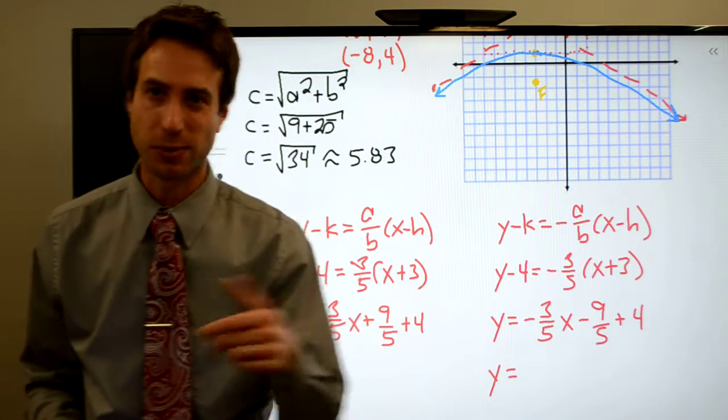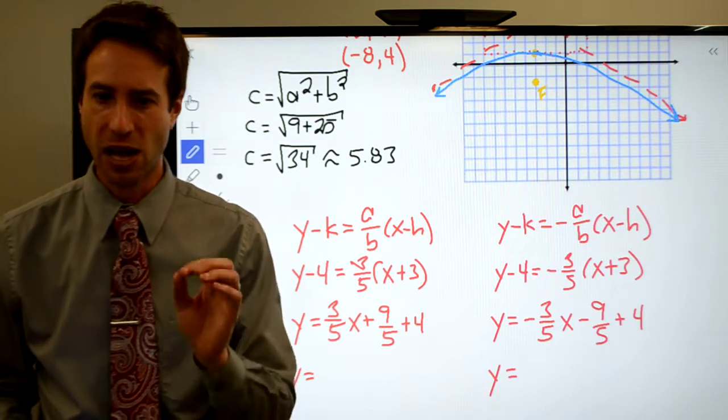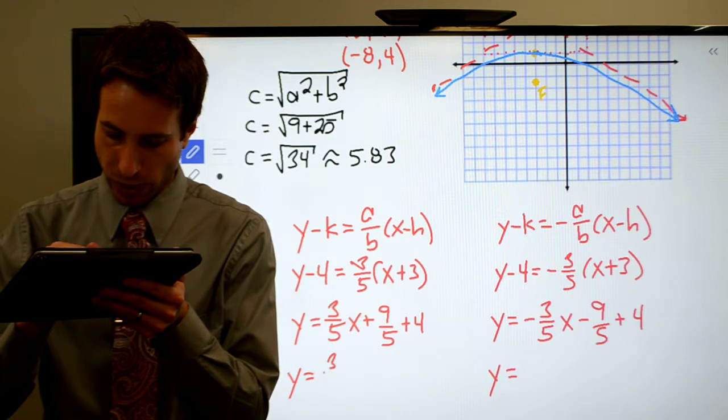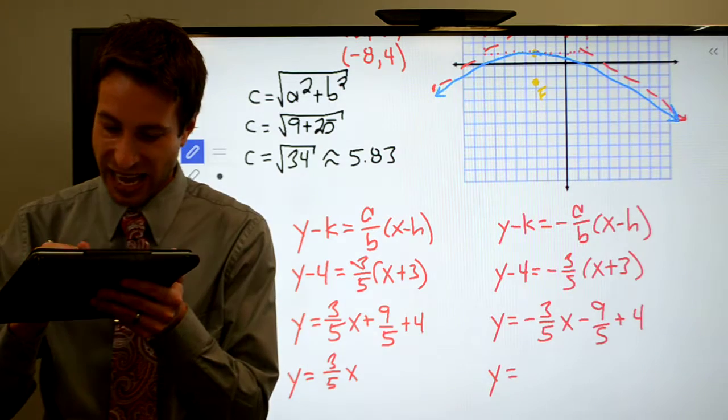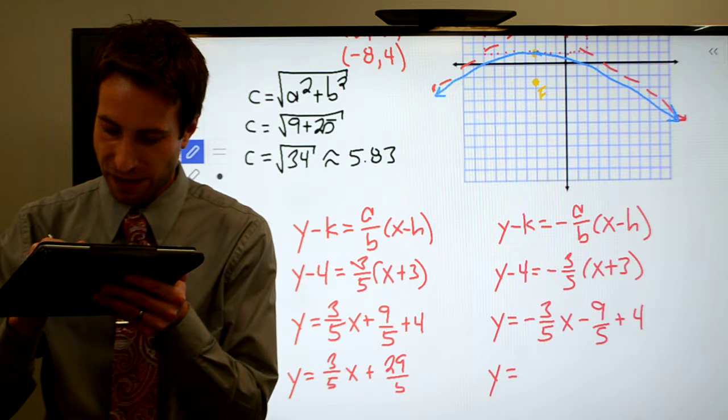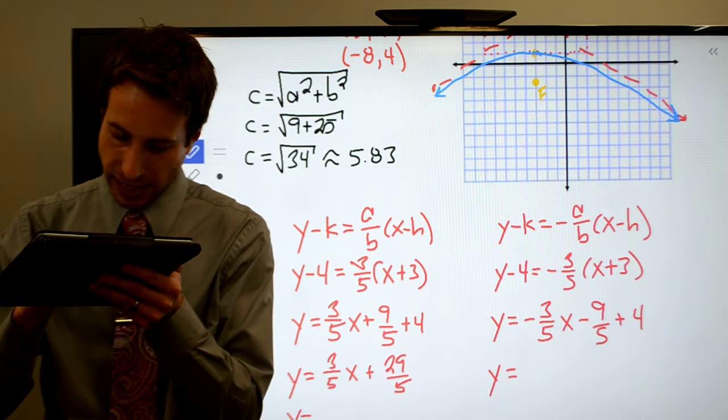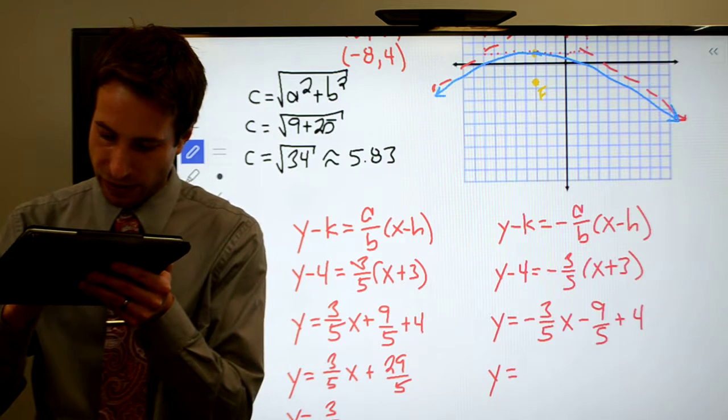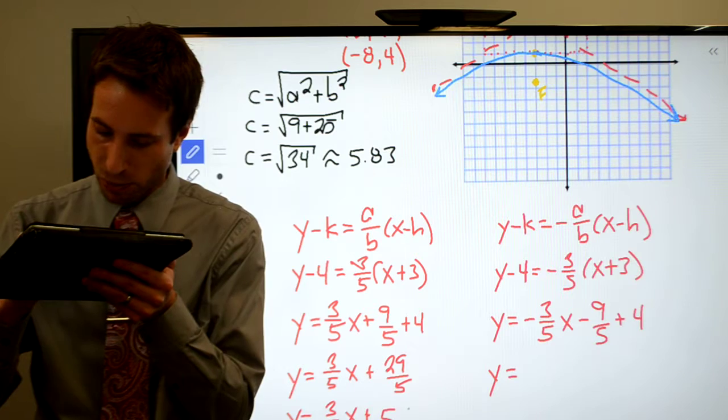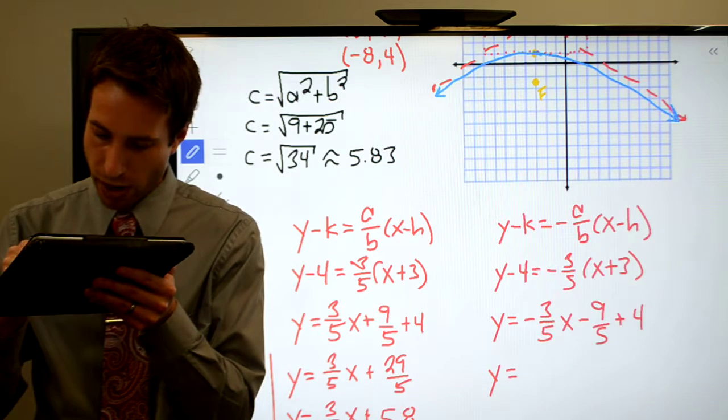Leave your y intercept as a decimal because it's generally easier to graph a decimal than a fraction. I'll give you both of them though. So you wind up with 3 fifths x as a fraction. I get plus 29 fifths, which is exactly the same as 3 fifths x plus 5.8. So either one of those, that's the one I would probably graph.